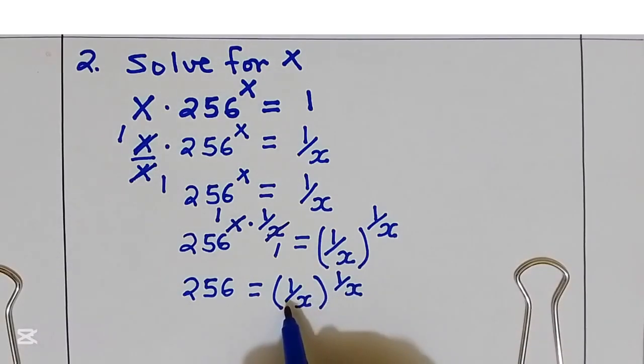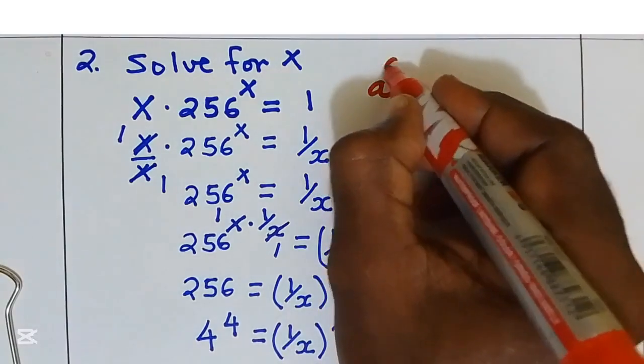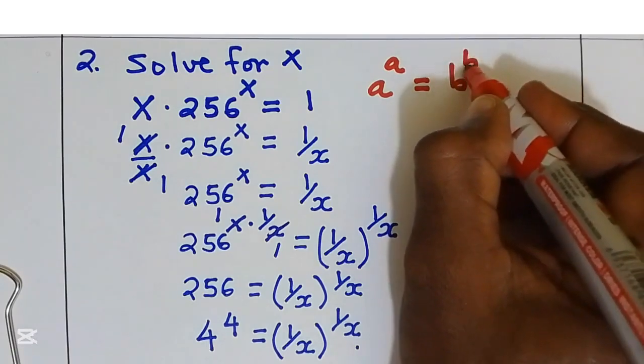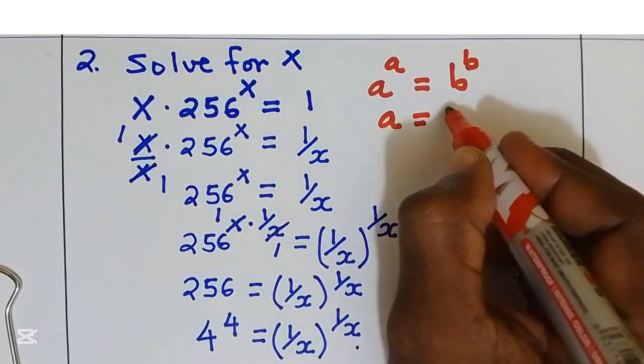At this stage on the right hand side, the base and the power are equal. So I'm going to find the way on the left hand side the power and the base to be equal. 256 is the same as 4 power 4. This is equal to 1 over x power 1 over x. But we know if we have a power a, this is equal to b power b, now a is equal to b.